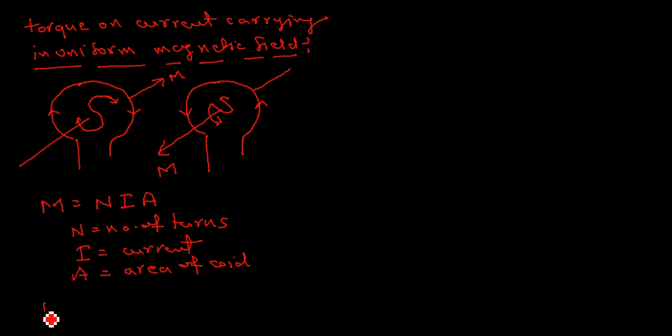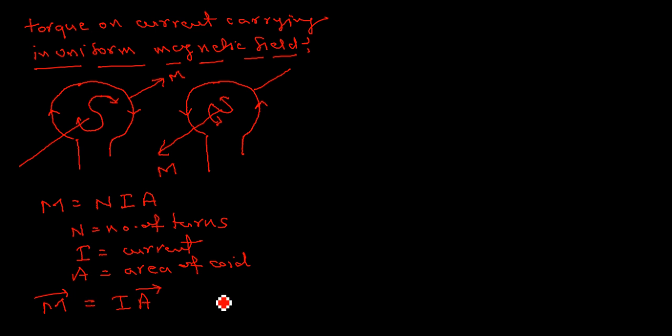When we say this M, this M is I into A-cap. And this A is basically the area vector.